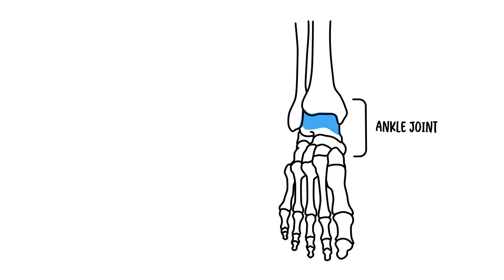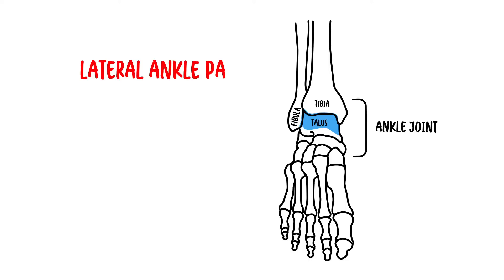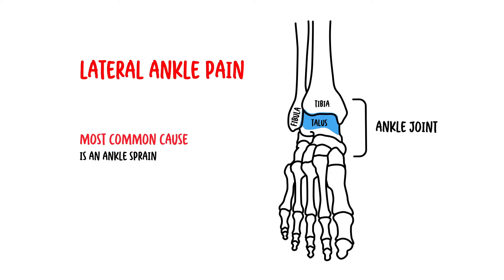The ankle joint is formed by the bones of the leg, the tibia and the fibula, and then the foot, the talus. Lateral ankle pain is common, and the most common cause is an ankle sprain. However, there are other causes which we will explore.